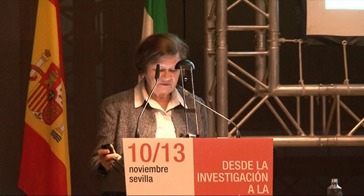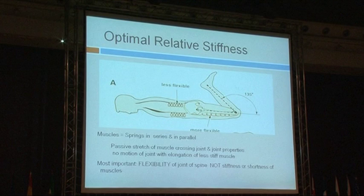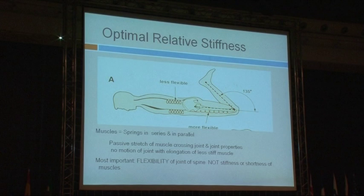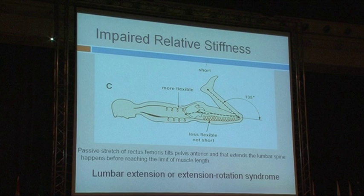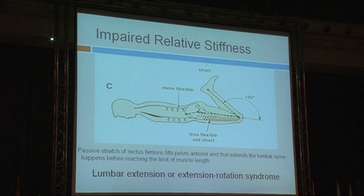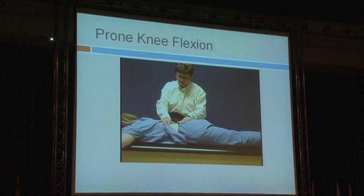A joint becomes more flexible than other contiguous joints because of decreased disc thickness or ligament laxity, and some muscles attaching to that joint are stiffer than others. In the example of optimal relative stiffness: the young man's back is not very flexible and he has very good abdominals, so his rectus femoris elongates when he bends his knee — nothing happens to the back. In the example of impaired stiffness: his back is flexible and his abdominals are not very stiff, so when he flexes his knee, the rectus femoris pulls on the pelvis causing anterior tilt — resulting in a lumbar extension or lumbar extension-rotation syndrome.